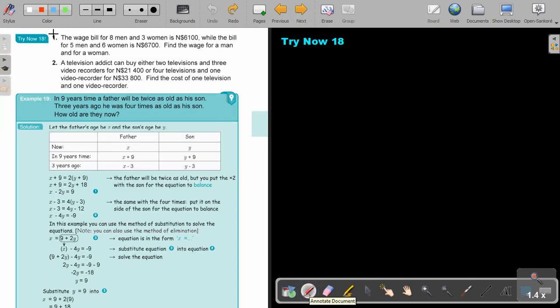I want you to stop the video and just do number one. You can continue the video as soon as you are finished. Number one. The wage bill for eight men and three women is 6100. You can just decide already. Men is, they mention men first, so let's make it X. Then they mention the woman, make it Y. So if it's eight men plus three women, I'm getting 6100. First, leave out the units. While for five men plus six women, it is 6700.